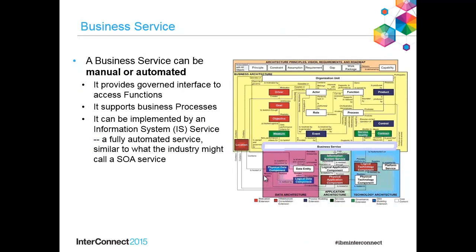The business service layer — we looked at this in some of the previous slides. A business service provides a layer to the business architecture. It can be a manual service or an automated service, and it provides a governed interface to access functions of the business. It can be implemented by an information system service or an application, according to the TOGAF metamodel. That information system service is kind of like a SOA service and is optional to model — it comes with the services extension. So we've turned that off in this workshop, and we're going to directly relate business services to application components.